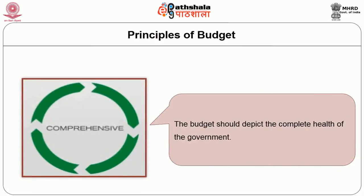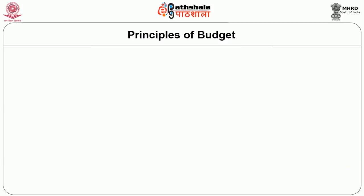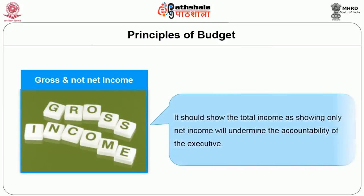Second, Comprehensive — the budget should depict the complete health of the government. It should show in detail the performance of the various ministries so that everyone knows the correct position and does not grudge in paying taxes. Further, it would also be convenient for the legislature to exercise control. In other words, it should contain all the foreseeable items of income and expenditure. Third, Gross and not net — it should be based on gross income and not net income. In other words, it should show the total income, as showing only net income will undermine the accountability of the executive. The gross basis makes the budget realistic and gives the total picture of the department, and it also aims at checking the misuse of funds collected through revenues.